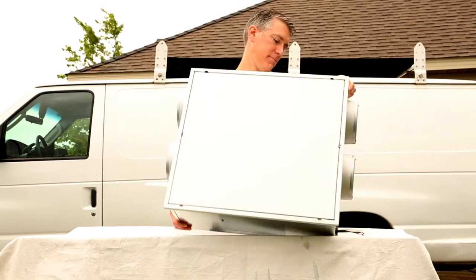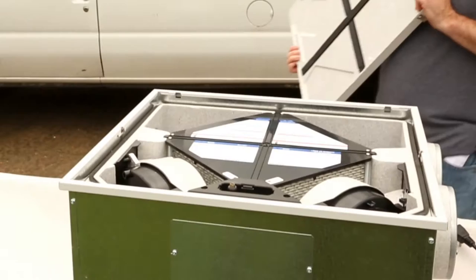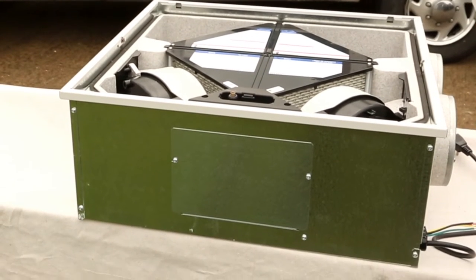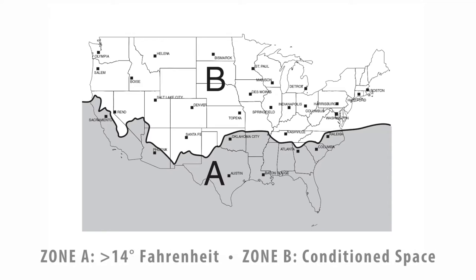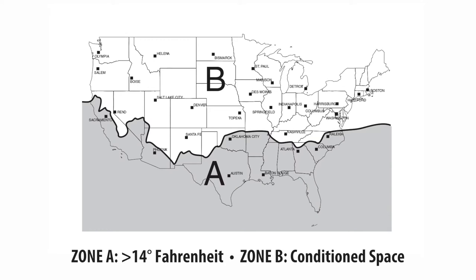The ERVS-100 is designed for installation where temperature is above 14 degrees Fahrenheit throughout the year, or Zone A on this map. Units installed in Zone B must be installed in a conditioned space.